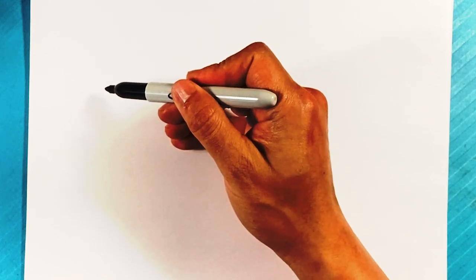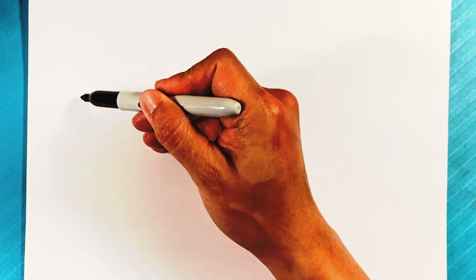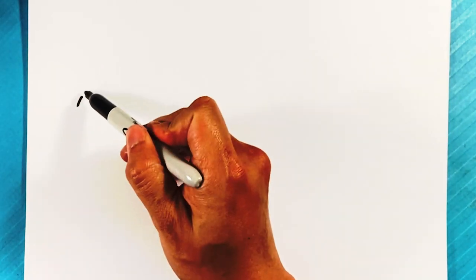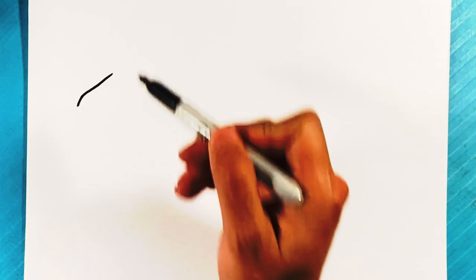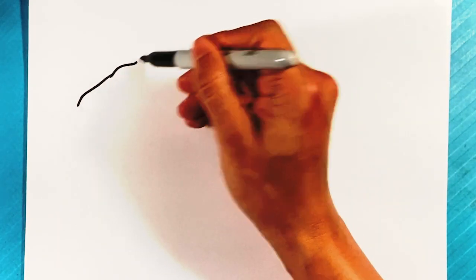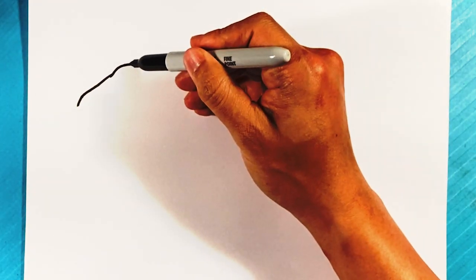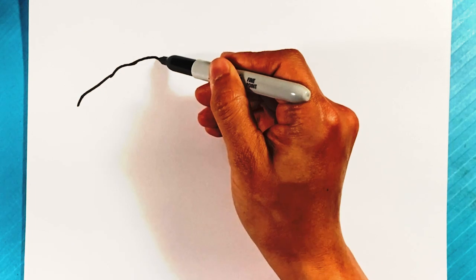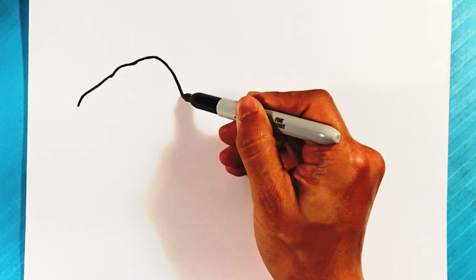I'm gonna start right here with the top of his head, the front part of the top of his snout. Line right there. Really small, right? Pulling over here, back, curve a little bit right here for the brow.